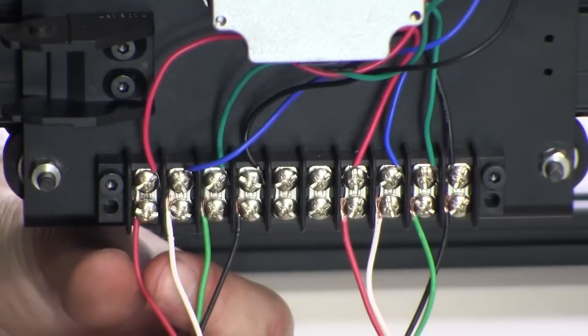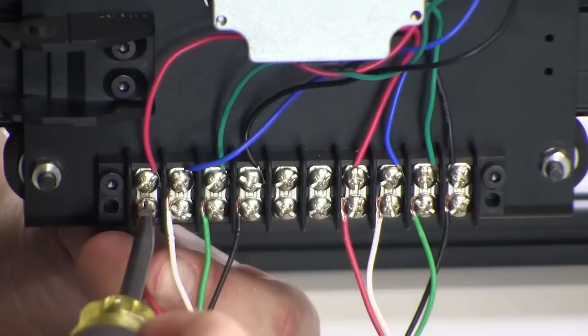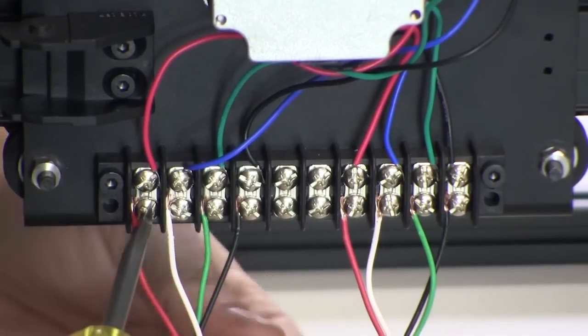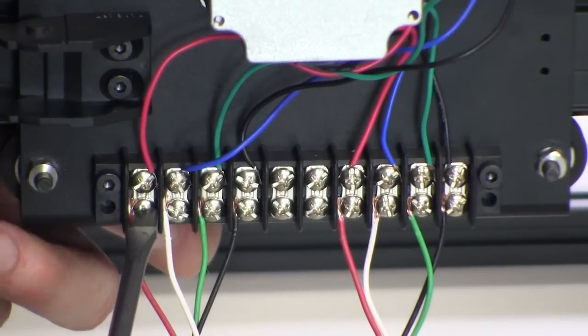The other six-foot length of cable will be on the left side of the terminal block and correspond to the Z-axis motor. Again, using the same pattern of red, white, green, black from left to right.